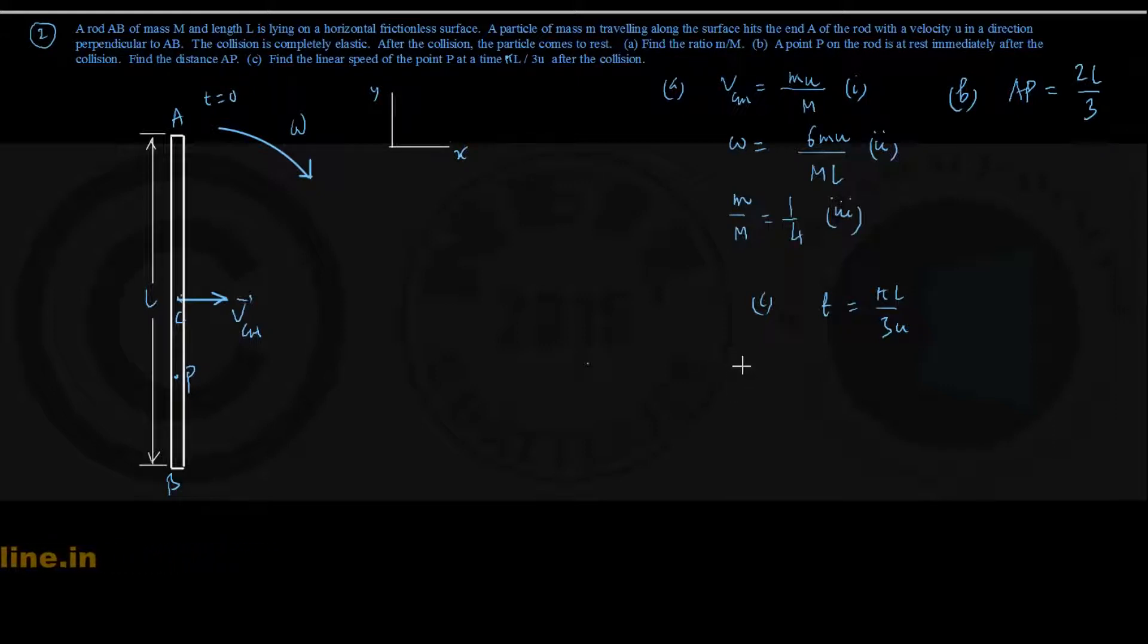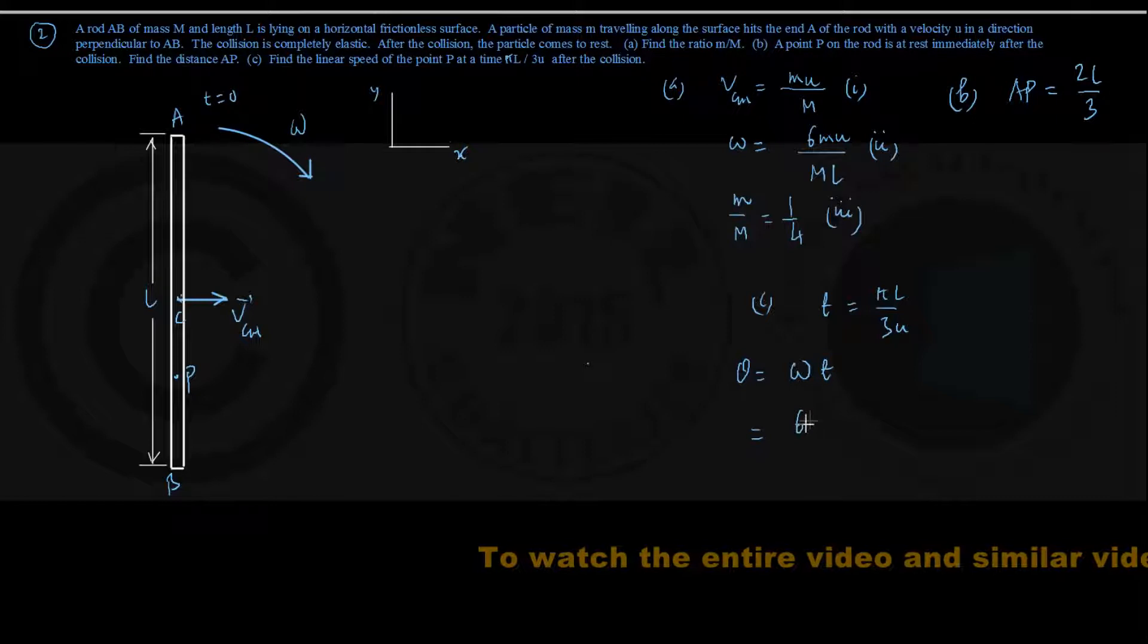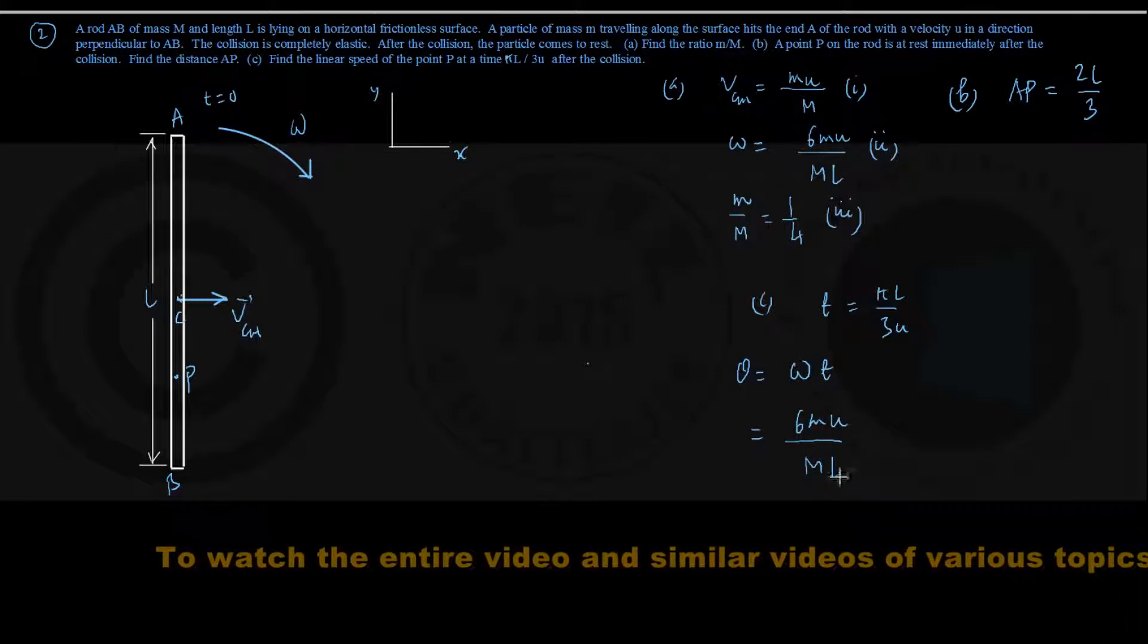This is given by theta equals constant angular velocity omega into time of travel. Omega, looking up their equation number 2, is giving me 6 times small m times small u divided by capital M times capital L.